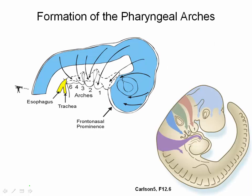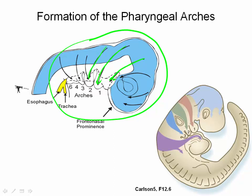At the same time that the embryo is folding, a neural crest cell migratory event is also occurring. In the future cranial region of the embryo, neural crest cells leave their position lying next to the neural tube and surround the foregut entirely. Once in place, these neural crest cells proliferate extensively to form a series of block-like swellings referred to as the pharyngeal or branchial arches.